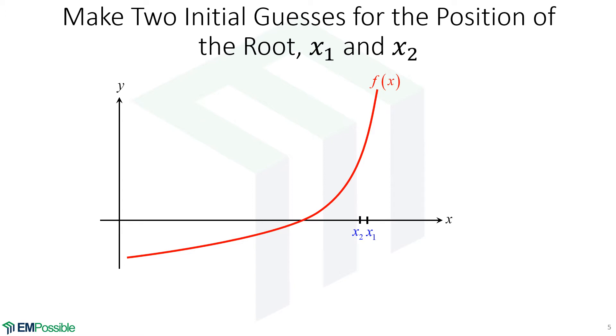One difference now between this and the Newton-Raphson method. With the Newton-Raphson method, we only needed one guess. Here, we need two guesses, and that's because we're going to have to somehow numerically determine the slope, and we need two points to connect those with a line to estimate the slope.